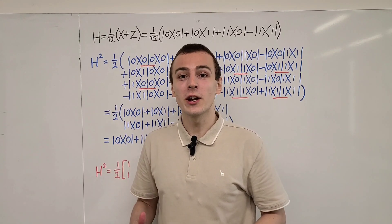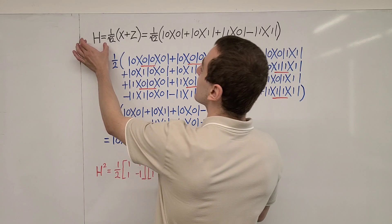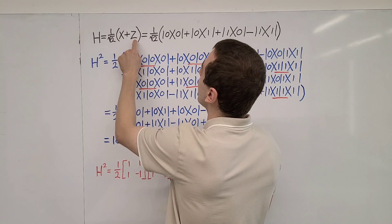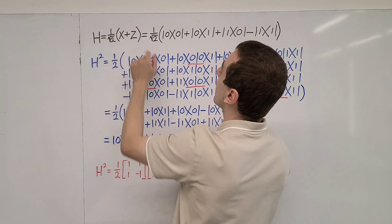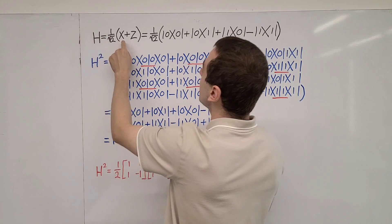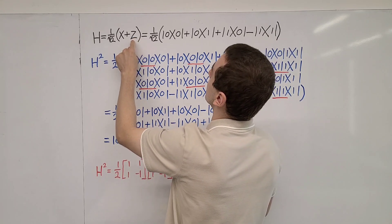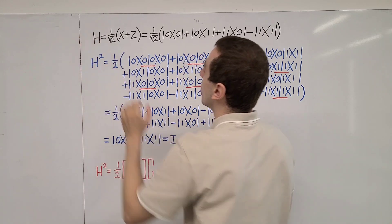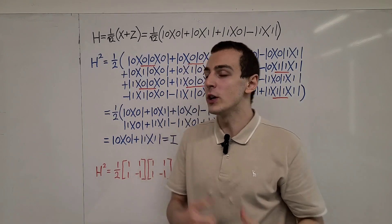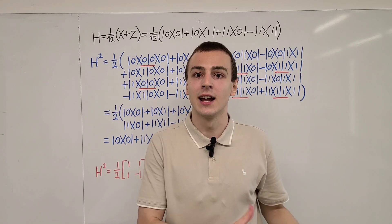Let's use Dirac notation to square the Hadamard gate. In the previous video in the quantum mechanics playlist, I defined the Hadamard gate in terms of the Pauli matrices. Here we have Pauli X and Pauli Z. If we take the sum of Pauli X and Pauli Z and then divide by the square root of two, we will have the Hadamard gate. The Pauli X gate is responsible for bit flips and the Pauli Z gate is responsible for phase flips. If we take the sum, we get this Hadamard gate which allows us to translate between the language of bit flips and the language of phase flips. We do this by moving from the Pauli Z eigenbasis to the Pauli X eigenbasis, and we can move back as well.